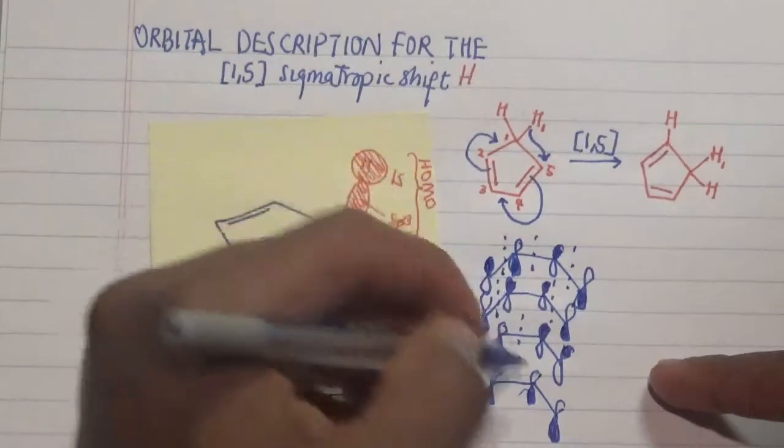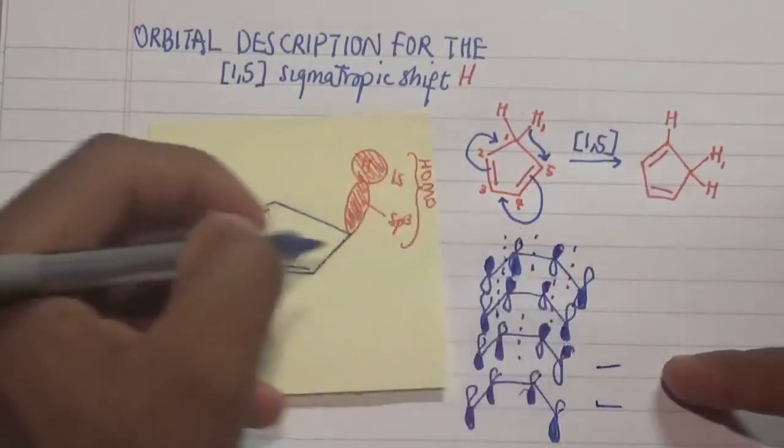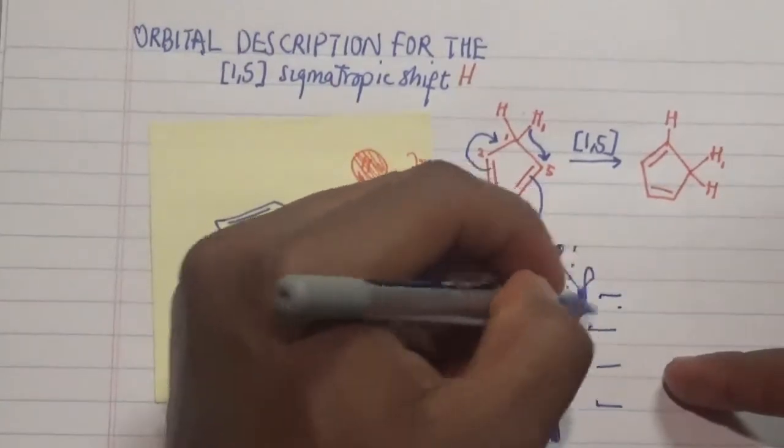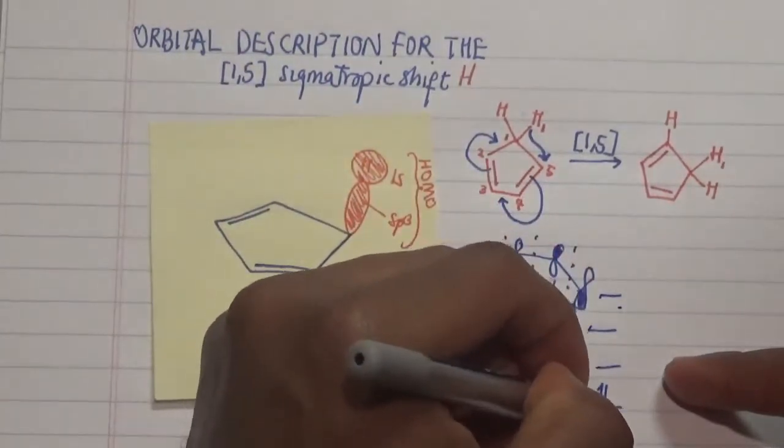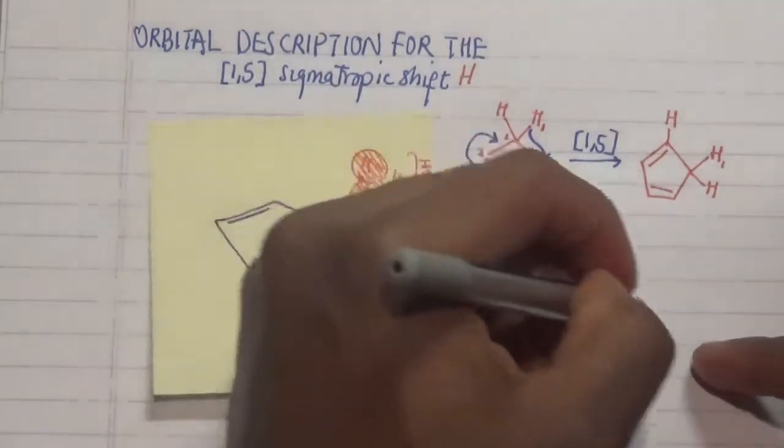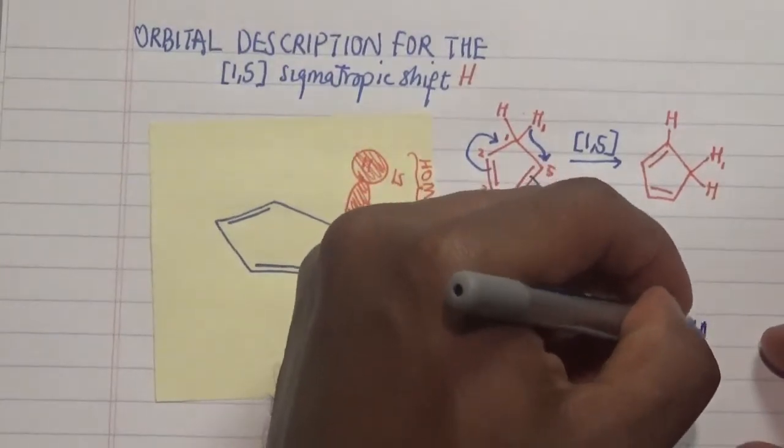Now in this case, since there are four electrons in here, then we're going to fill our four electrons in the two lowest energy levels here. One, two, and then this third part here is actually our LUMO.